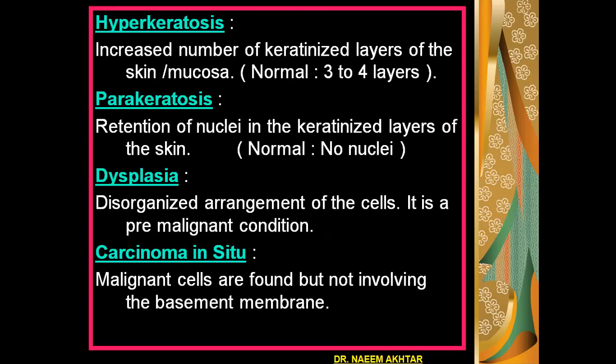Hyperkeratosis means increased number of keratinized layers of the skin or mucosa — normally there are only three to four layers, but in hyperkeratosis the number of layers is increased. Parakeratosis means retention of nuclei in the keratinized layers of the skin or mucosa — normally there are no nuclei in the keratinized layers. Dysplasia means disorganized arrangement of the cells; it is a pre-malignant condition. Carcinoma in situ is said when malignant cells are present but not involving the basement membrane. These are the different terms used when describing pre-malignant lesions.